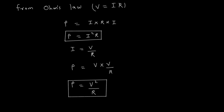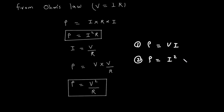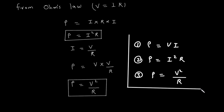Let's revise — there are three formulas for power. Number one: power is equal to V into I. Second formula: power is equal to I square into R. And third formula: power is equal to V square upon R. So these are the three formulas to calculate electric power.